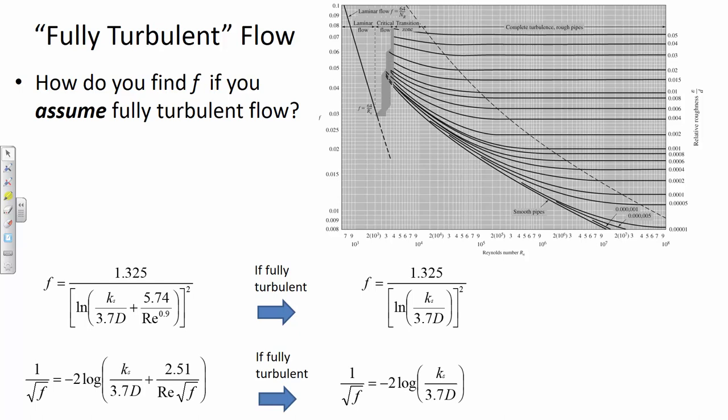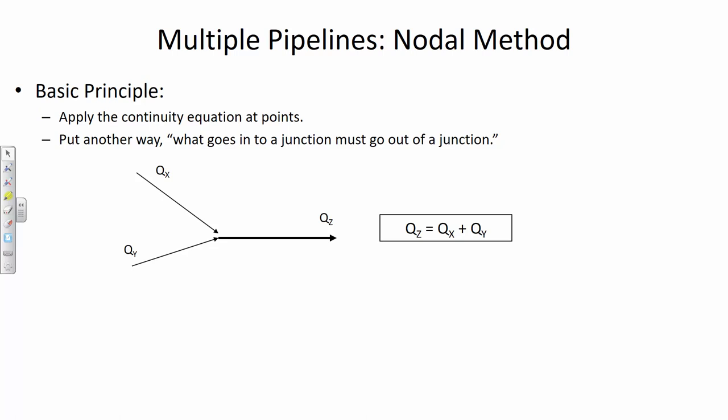Here's how we could reconfigure the Colebrook equation if we're invoking that same assumption. We're assuming really high velocity means big Reynolds number. Big Reynolds number means that the second term effectively moves towards zero, or is so small compared to K sub S divided by D — the relative roughness ratio — that it doesn't have any meaningful effect on the F value.